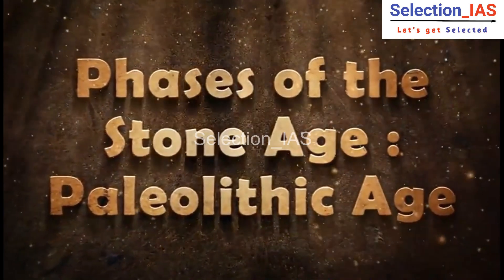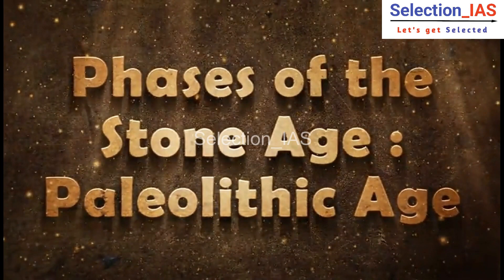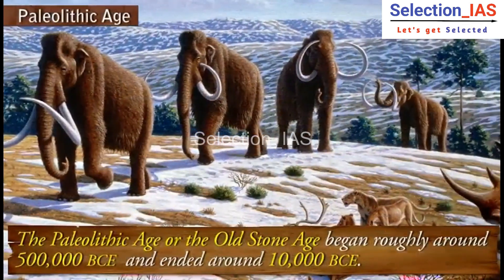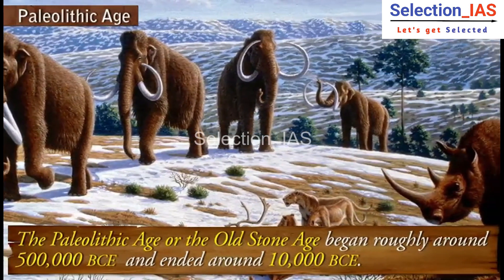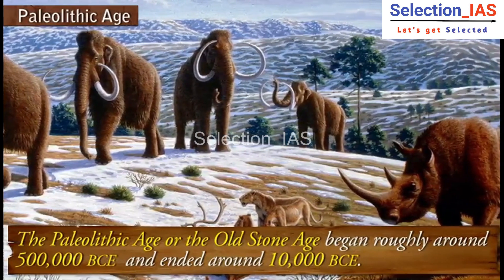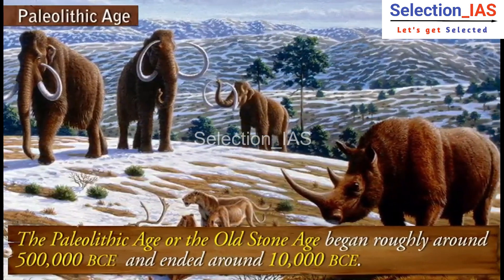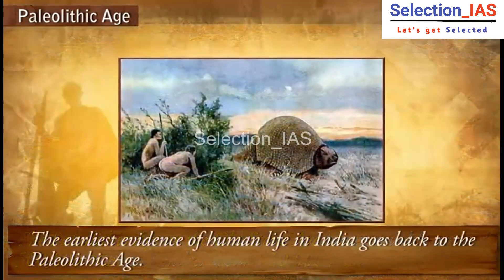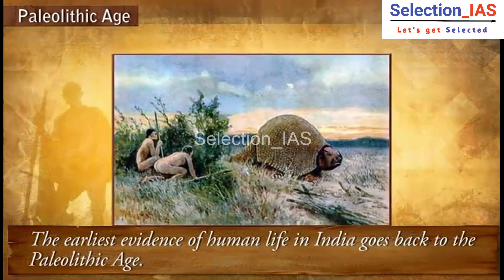Phases of the Stone Age: Paleolithic Age. The Paleolithic Age, or the Old Stone Age, began roughly around 500,000 BC and ended around 10,000 BC. The earliest evidence of human life in India goes back to the Paleolithic Age.